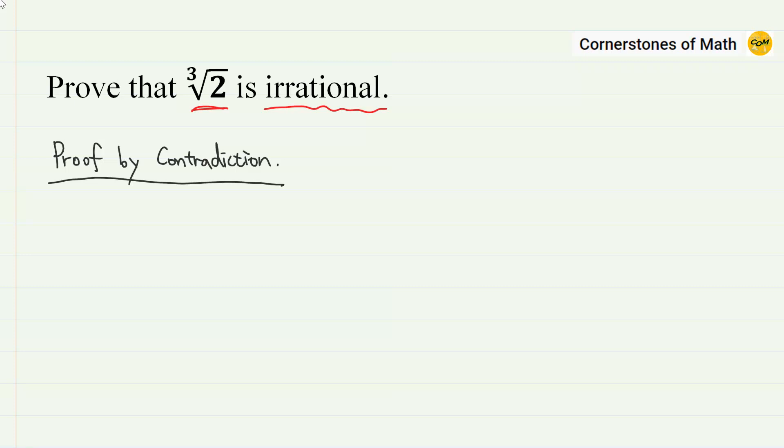We are going to use the famous proof by contradiction. So first, assume that the cube root of 2 is rational. Then, the cube root of 2 can be expressed as an irreducible fraction, so cube root of 2 equals a over b, where a and b are co-prime natural numbers.